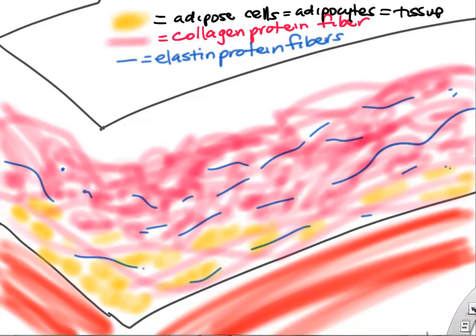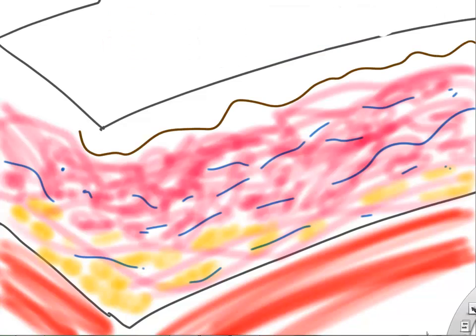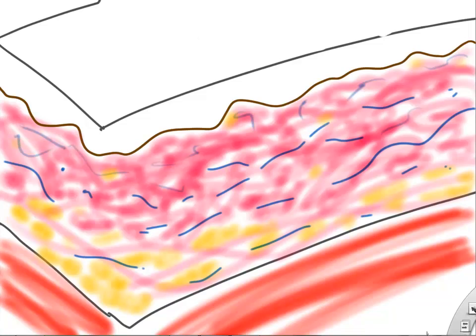We need to cover the connective tissue with an epithelial layer. We draw that basement membrane, which holds epithelium to connective tissue, and fill in a little more collagen and some adipocytes. Now we draw the final part, which is our epidermis or epithelial layer. We start with a base layer of stem cells, because we need to regrow that outer epithelial layer — those stem cells are kind of cuboidal. We also throw in some pigment cells called melanocytes at the base of our epithelium.